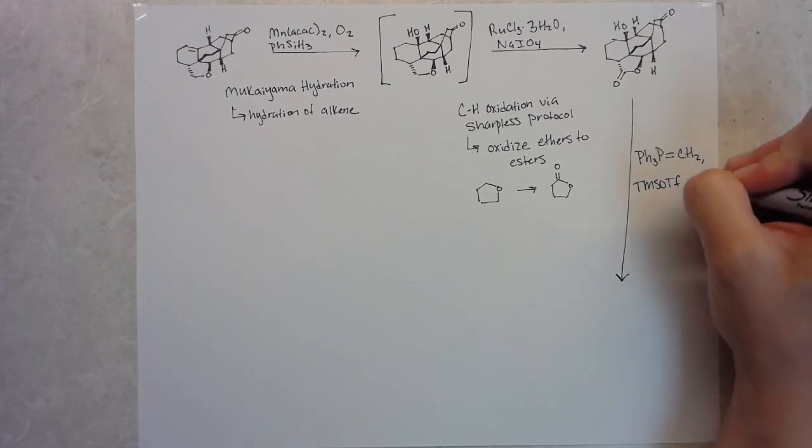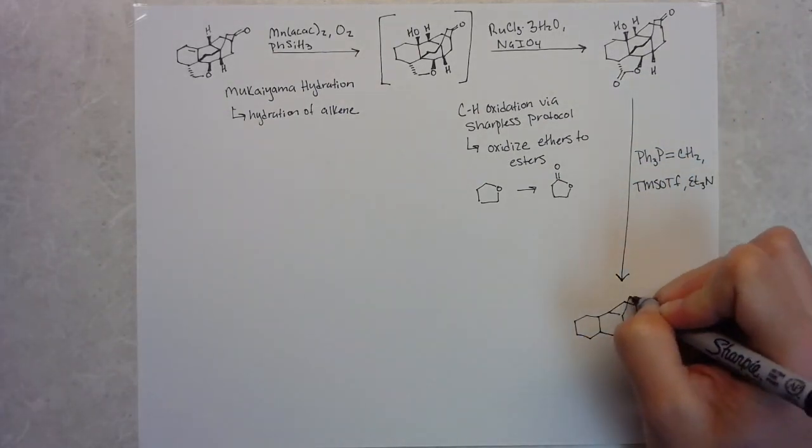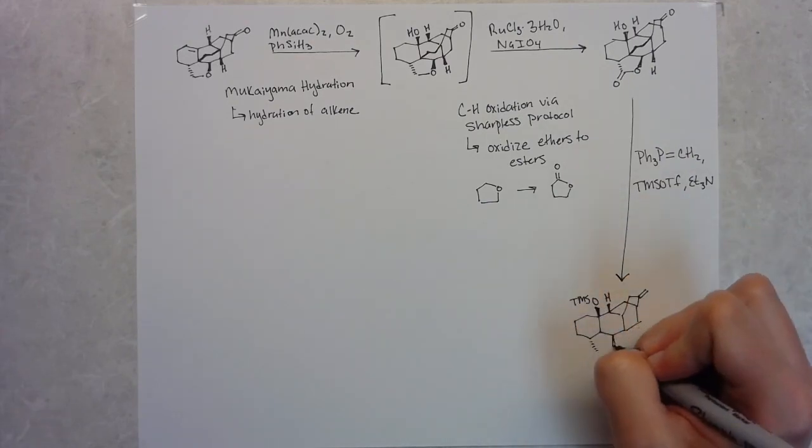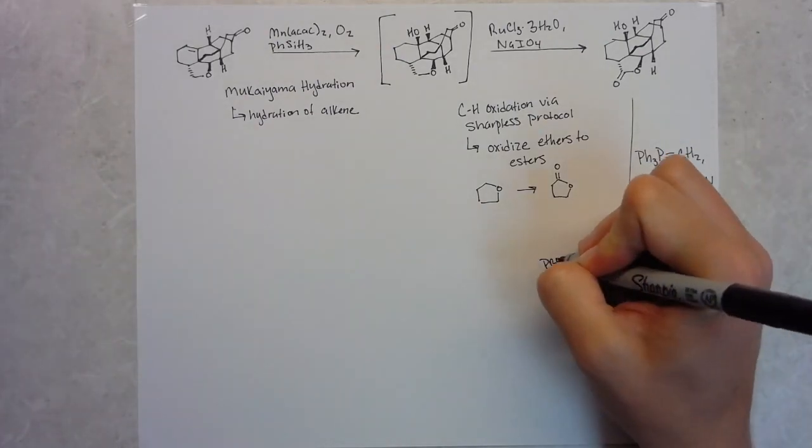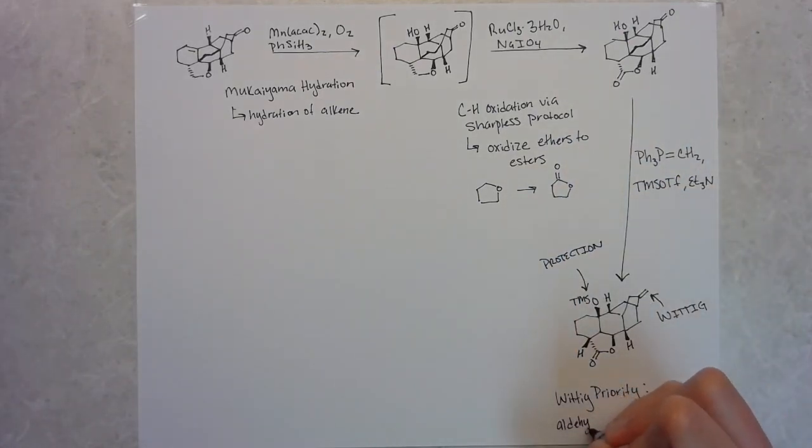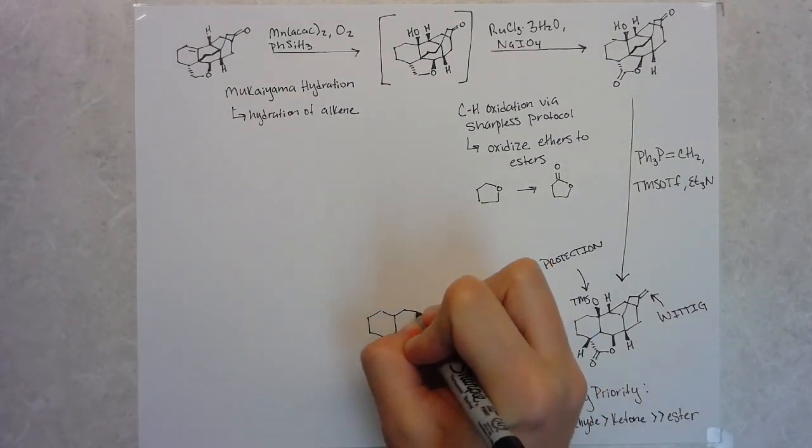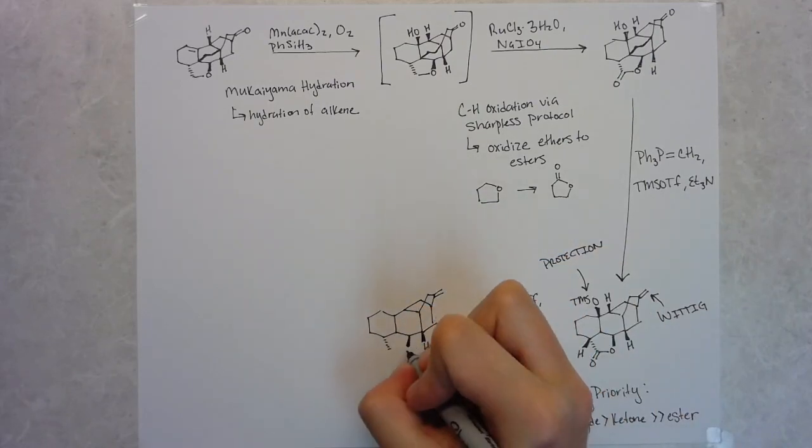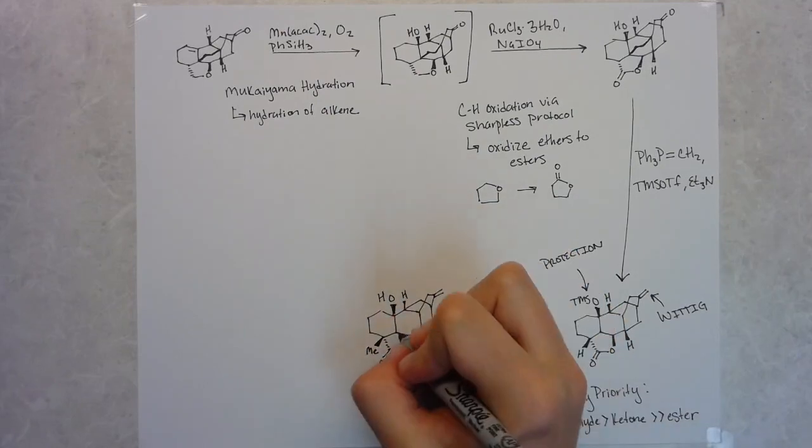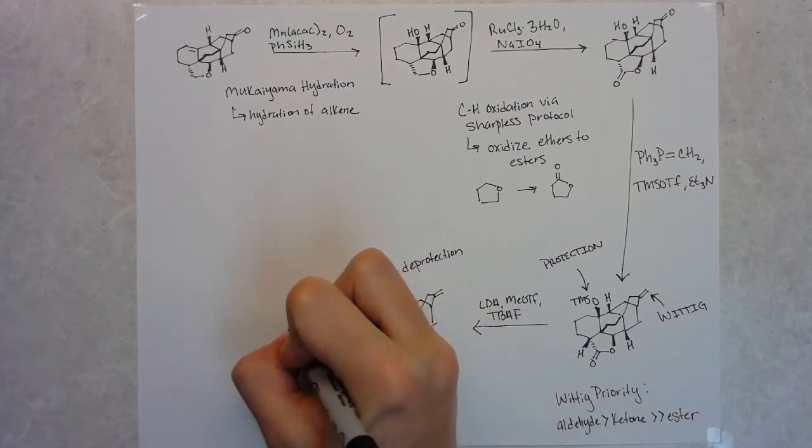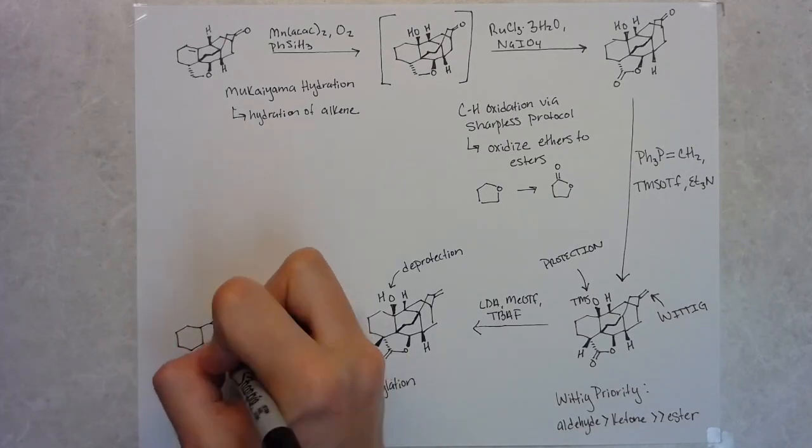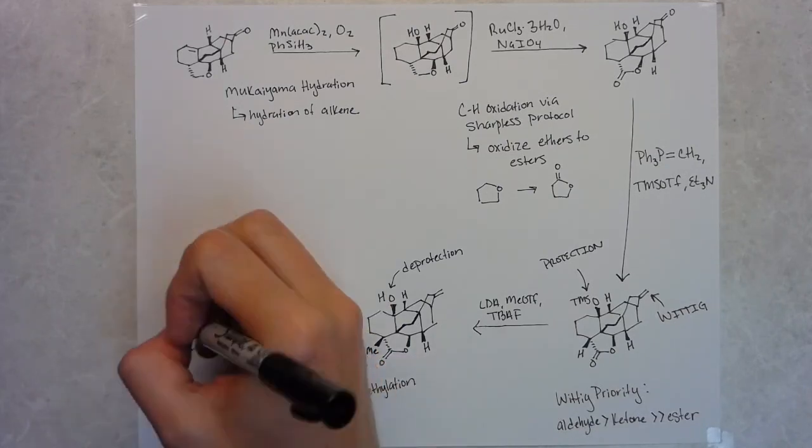Their next step is to do a Wittig reaction to install a CH2 group to the ketone on the peripheral bicyclo-2-2-2 octane ring. Just a reminder with Wittig reactions: because we have an ester and a ketone in this molecule, they're always going to add to an aldehyde, then a ketone, and then maybe an ester. So they were able to get selectivity for this carbonyl over the ester carbonyl. And in this step, they also do a protection of the tertiary alcohol.